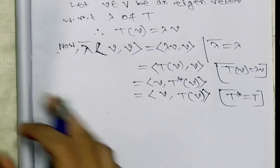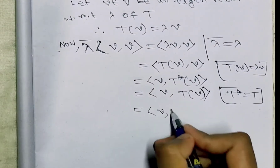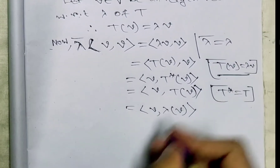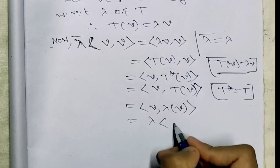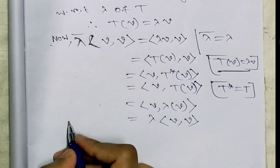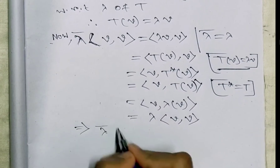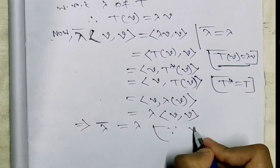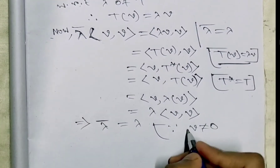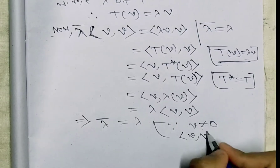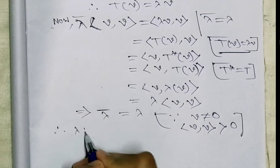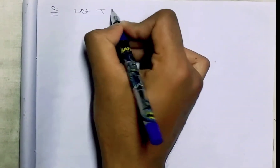This equals <v, lambda·v>, which equals lambda times <v,v>. This implies lambda-bar equals lambda, since <v,v> is always greater than 0 (as v is non-zero). Therefore lambda is real. Now the second property: Let T be a skew-adjoint operator on an inner product space V.